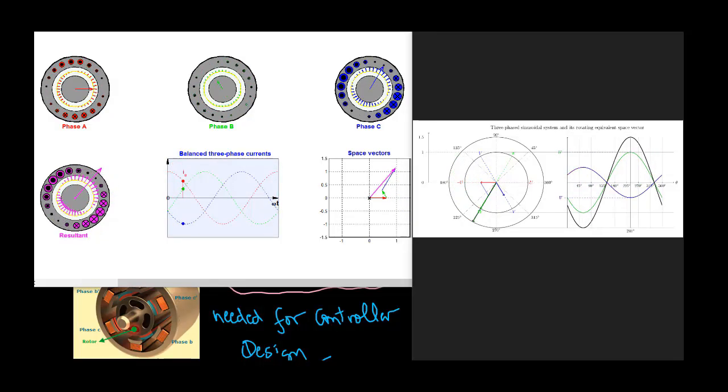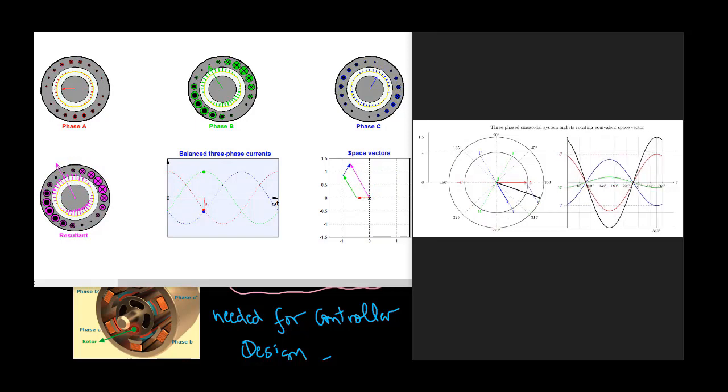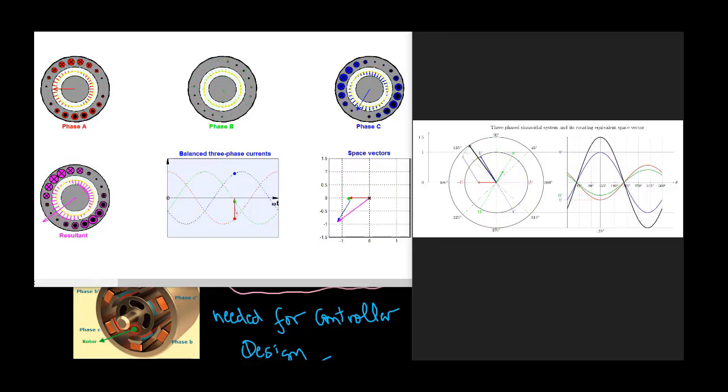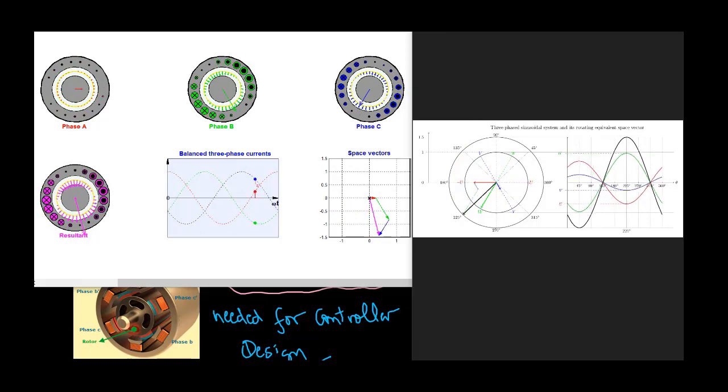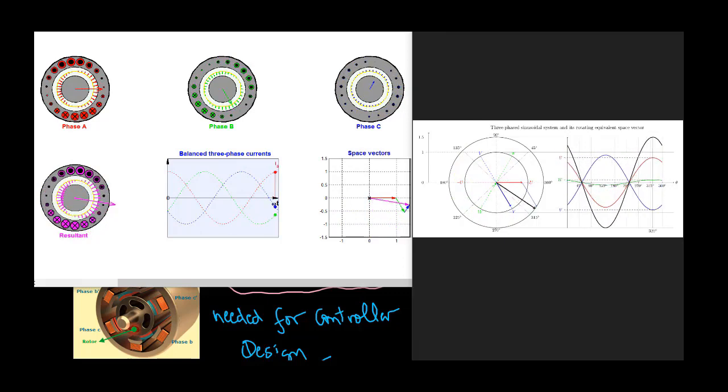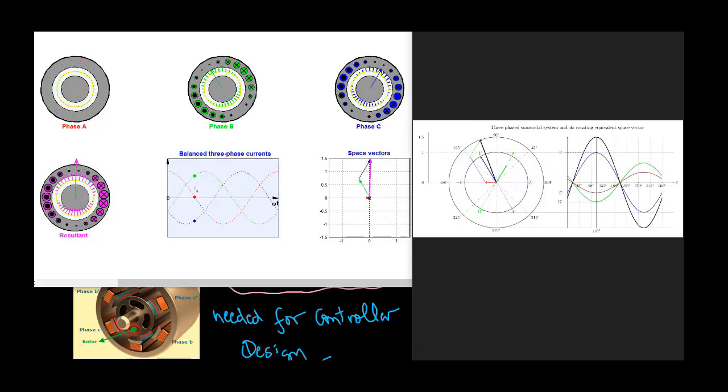In this section we have learned that the space vectors of three phase voltages, currents and flux are three rotating vectors in the complex plane. The speed of their rotation depends on the frequency omega of the three phase voltages and currents.